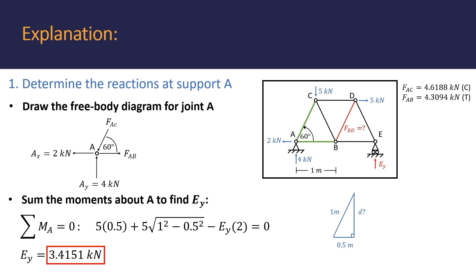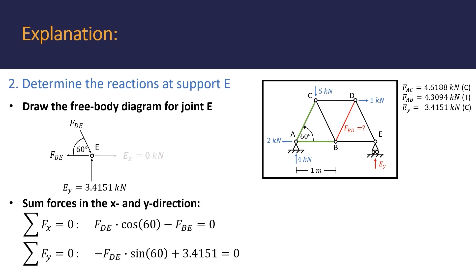With EY now known, we can now move on to determine the reactions at the other support E. We start off as we did with support A, by drawing the free body diagram of the joint. One thing to note is that joint E won't have any reaction force in the X direction due to the rollers that are supporting it.